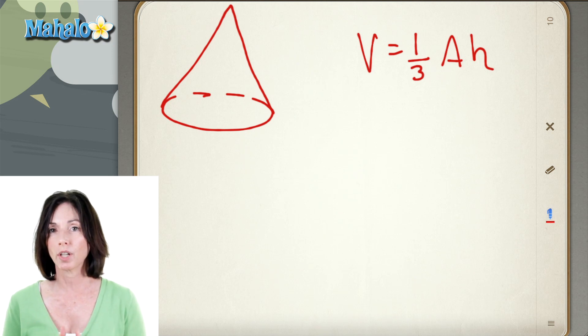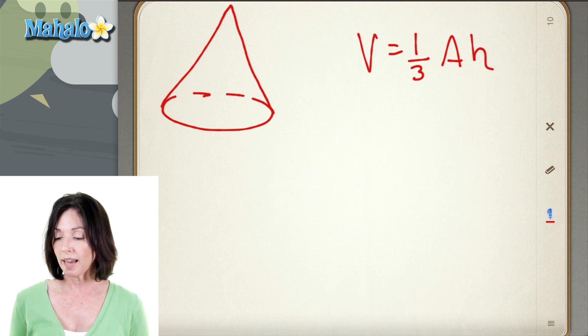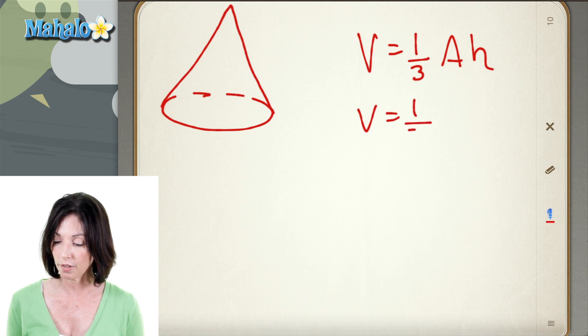So the base of the cone is a circle. So the area of the base, we can put in the formula for the area of a circle. So the volume is equal to one-third times pi r squared multiplied by the height.